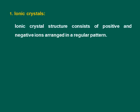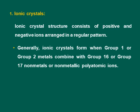Ionic crystal structure consists of positive and negative ions arranged in a regular lattice. Generally, ionic crystals form when Group 1 or Group 2 metals — such as sodium (Group 1) or calcium and magnesium (Group 2) — combine with Group 16 elements like sulfur and oxygen, or Group 17 elements like chlorine and fluorine. So Group 1 or Group 2 combined with Group 16 or Group 17 forms ionic crystals.